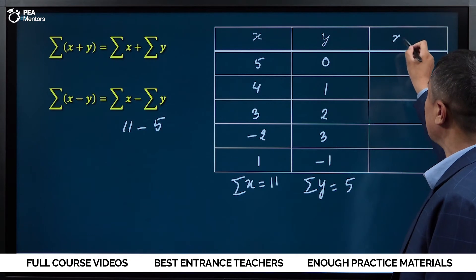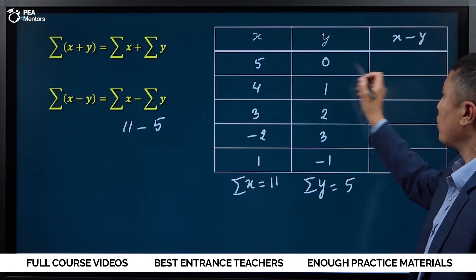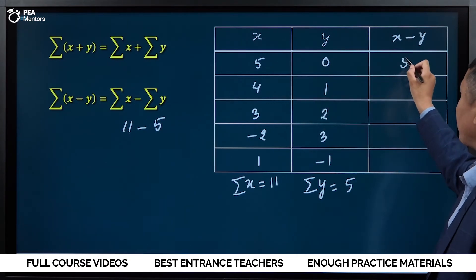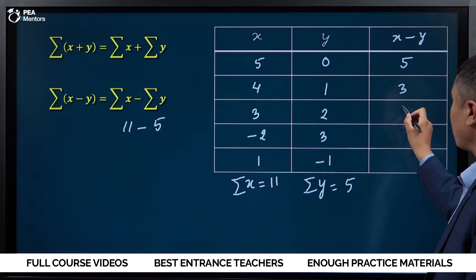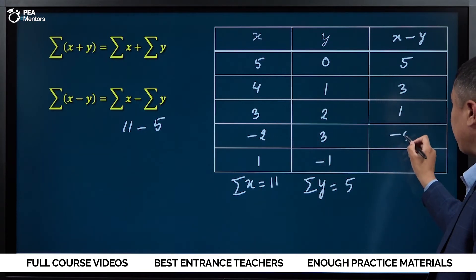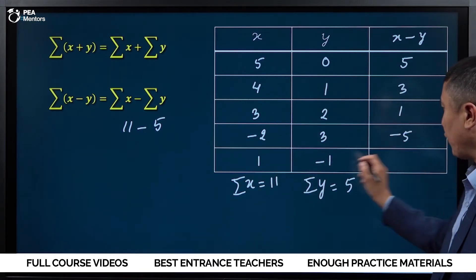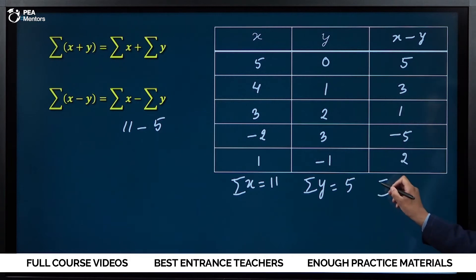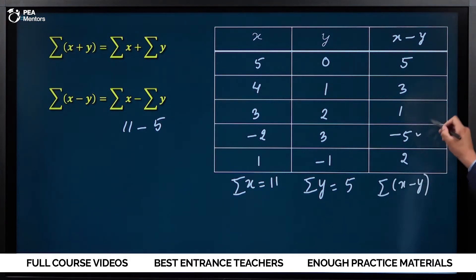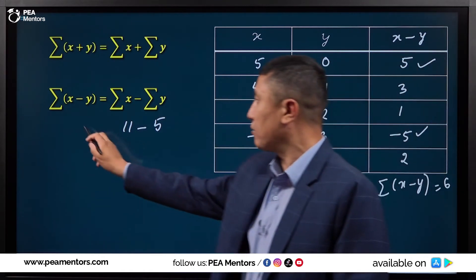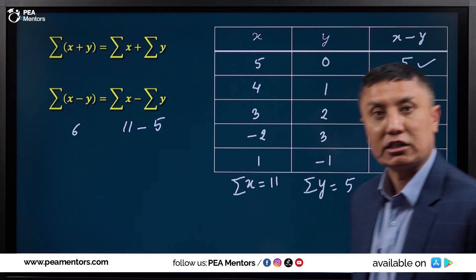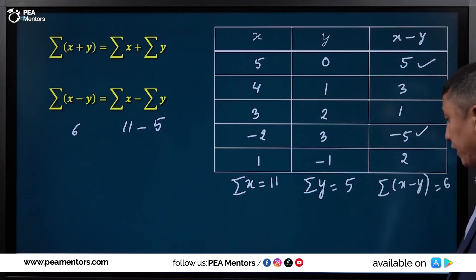In the summation of y, the difference is 5, the difference is 3, the difference is 1, the difference is minus 5, the difference is 2. In the summation of x minus y, this is 5, the 5 is cancelled, and this is 6.